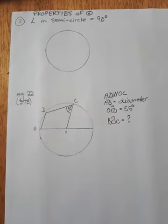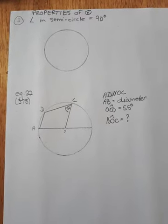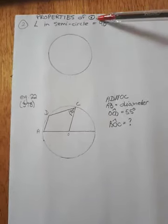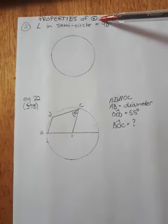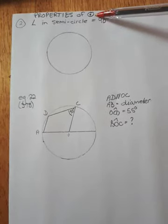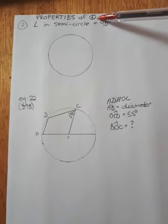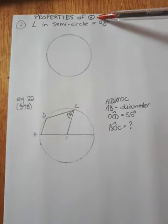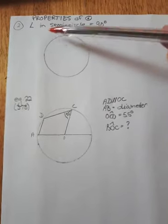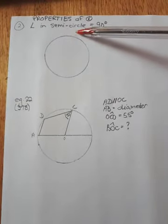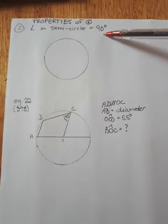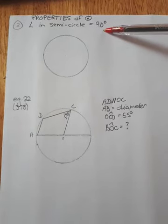Hello, the video that follows is on the topic of properties of circles, and it specifically covers the law where the angle in a semicircle is equal to 90 degrees.